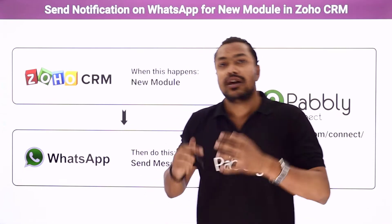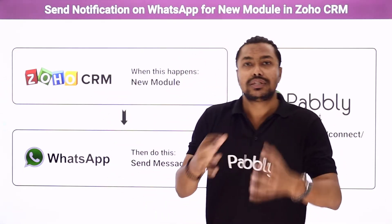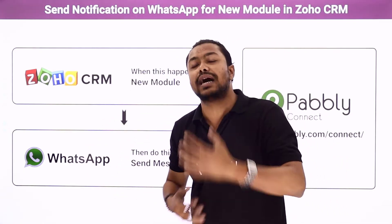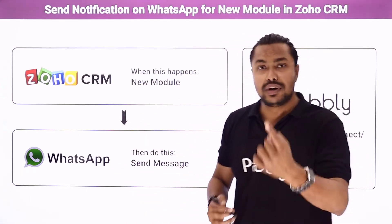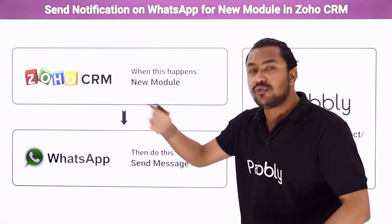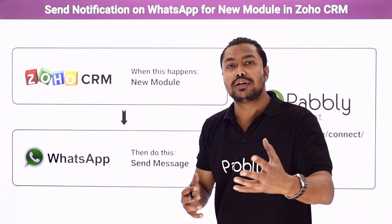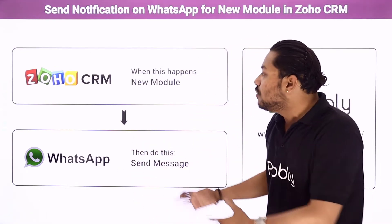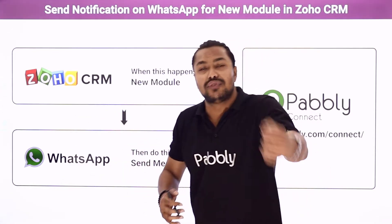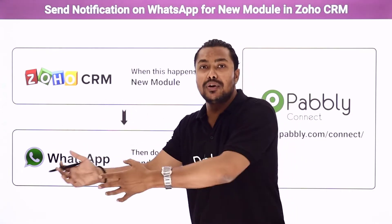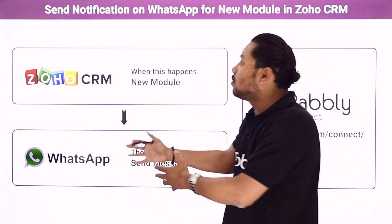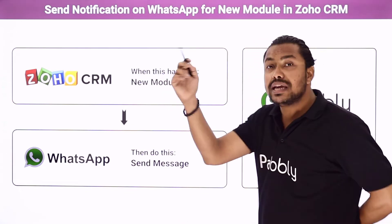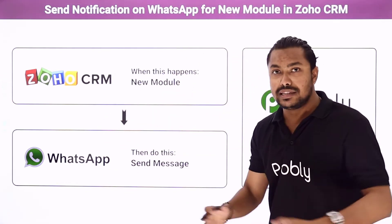Why do we need this automation? Suppose we are creating new leads in Zoho CRM — somebody is becoming a customer or buying a product from our company. First, we can send them a welcome message. Second, we can send promotional offers like a 10% or 20% discount, or a bonus offer like a one-on-one free product. You can have several thousand uses of this automation, saving a lot of time and effort, and building good relations with your customers.